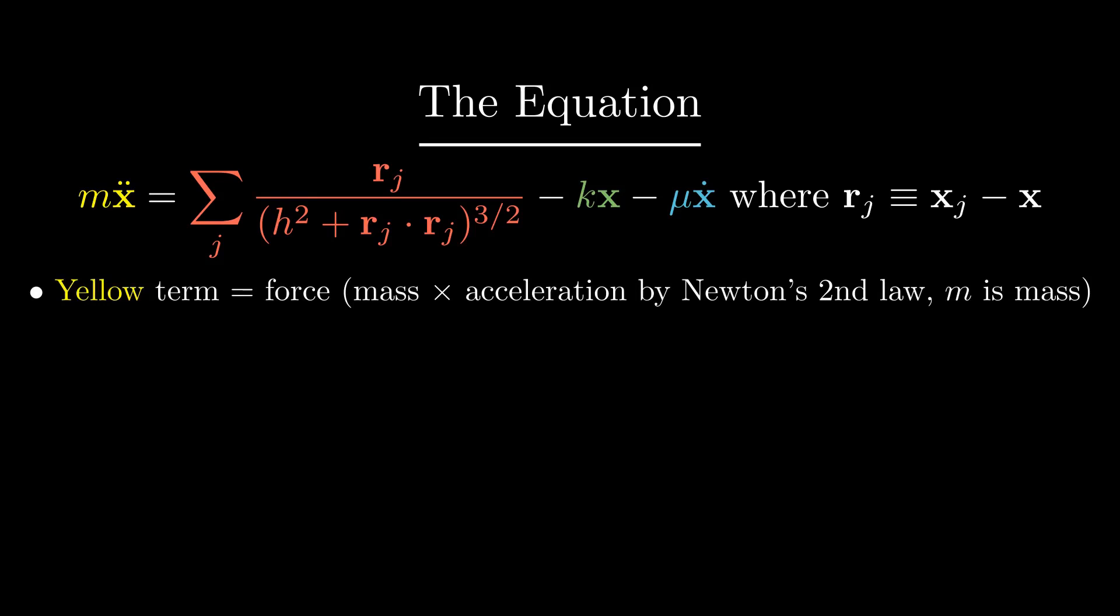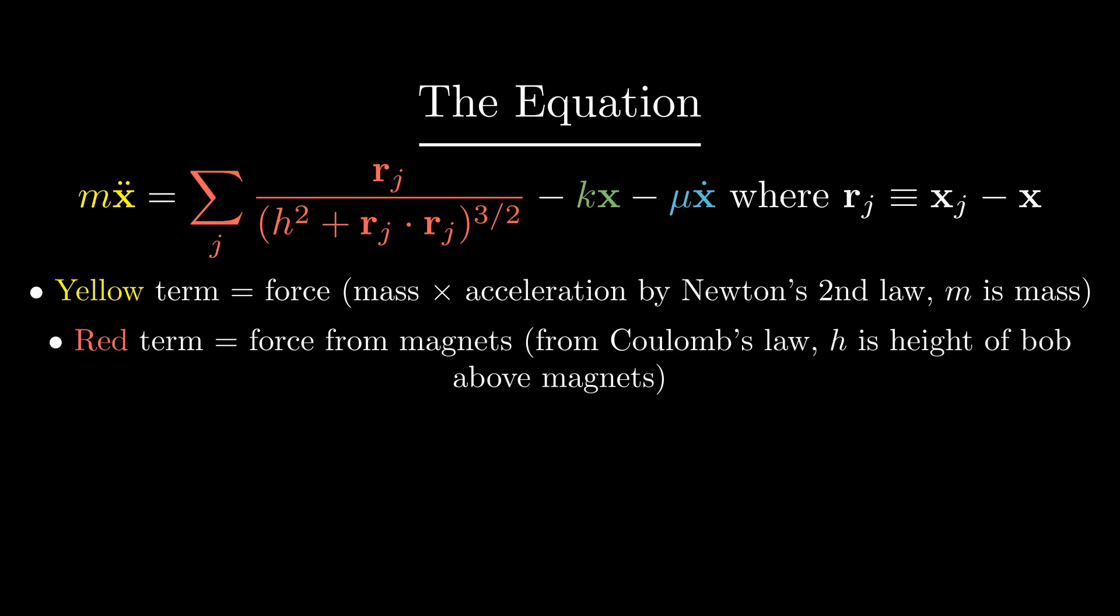The first part of this equation describes force from the magnets. By Coulomb's law, the force acting upon two point magnetic charges is inversely proportional to the square of the distance between them. Here, it's assumed they're equal for brevity's sake. The sum of the forces over all magnets is taken,